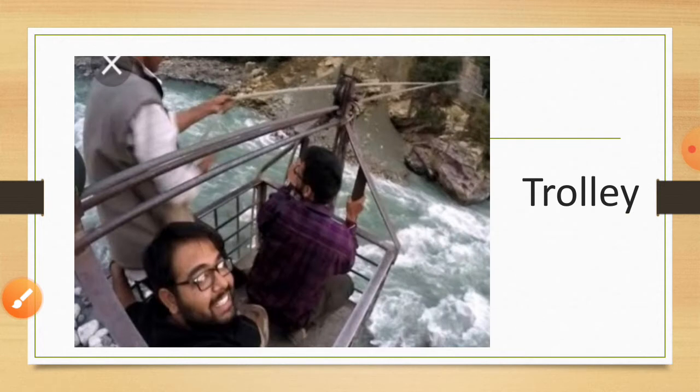Next is about trolleys. Trolleys are open boxes made of wood or iron, attached with a rope. A pulley helps the trolley to move across the rope. The ends of the ropes are tied tightly to a stone, tree, or rocks.